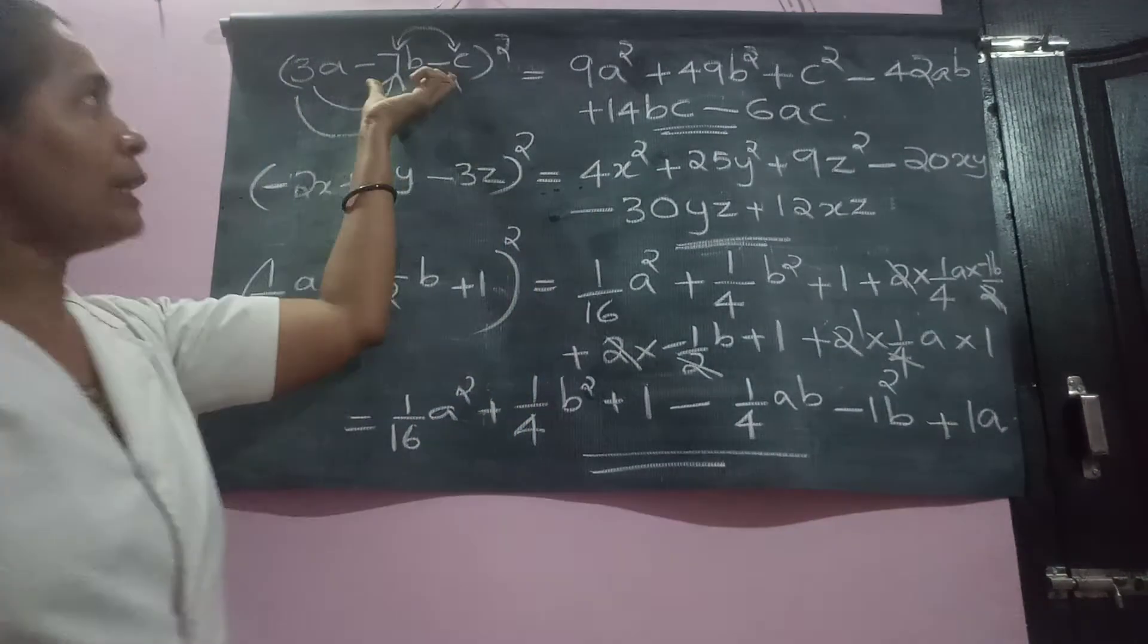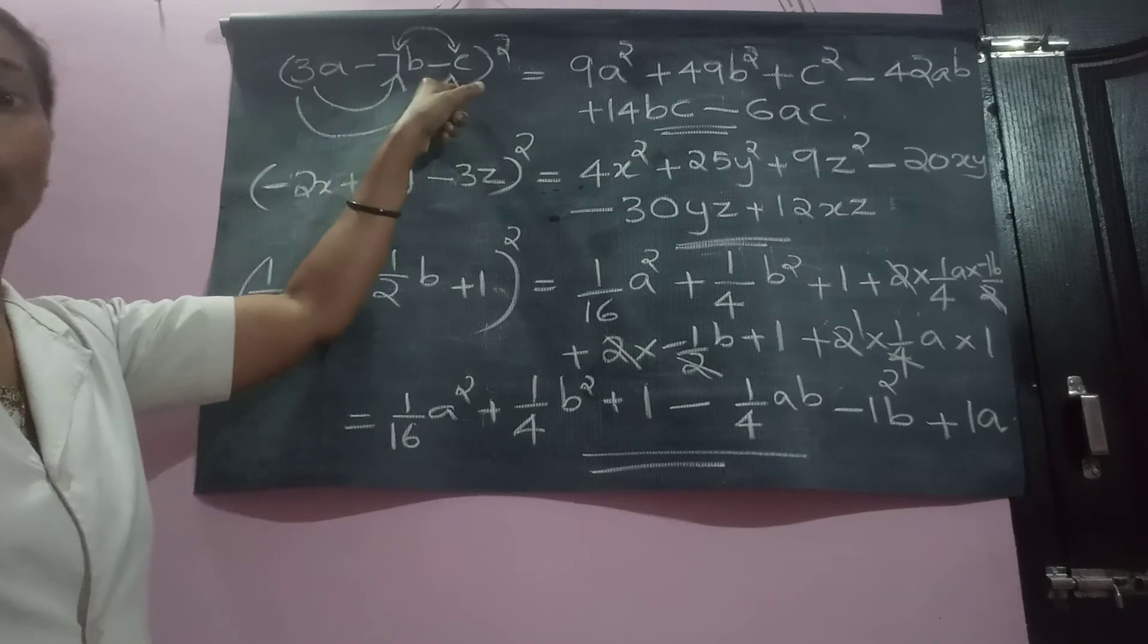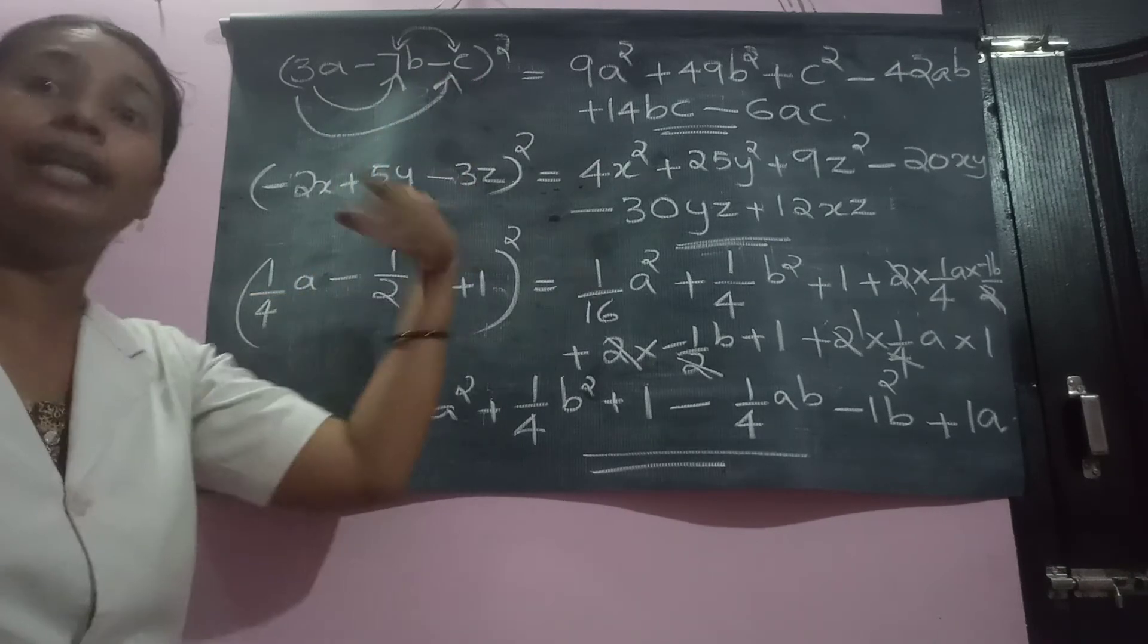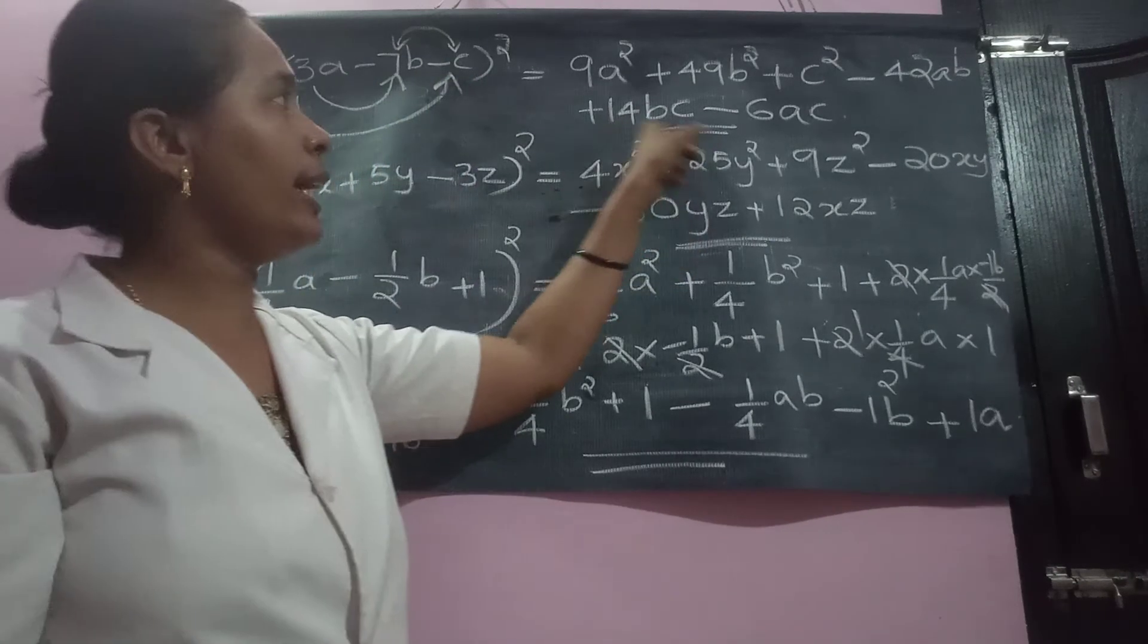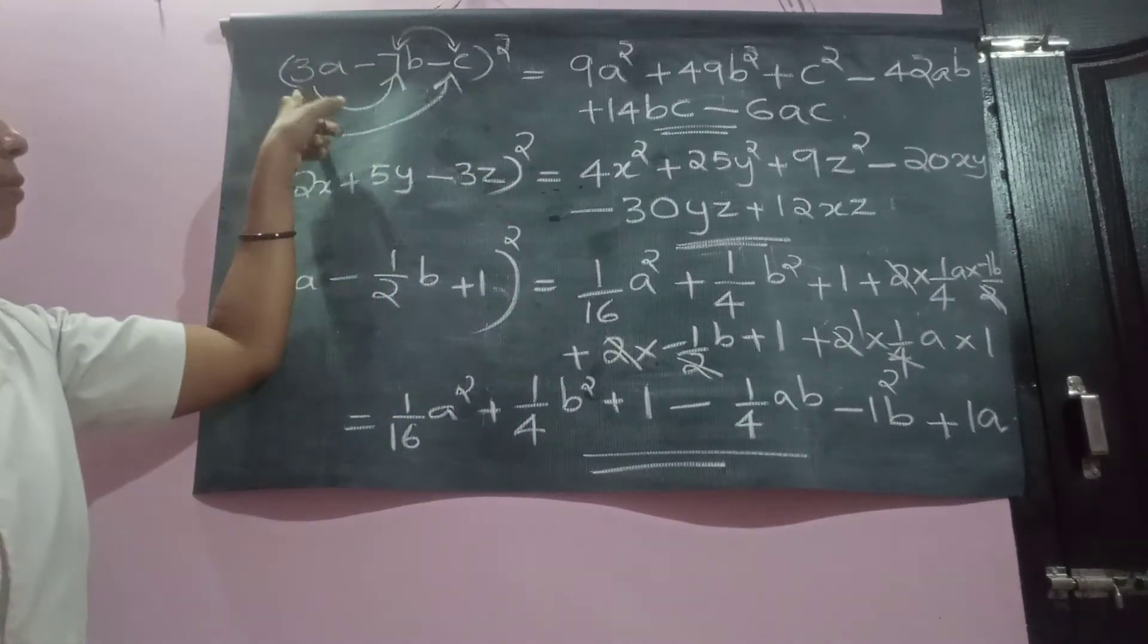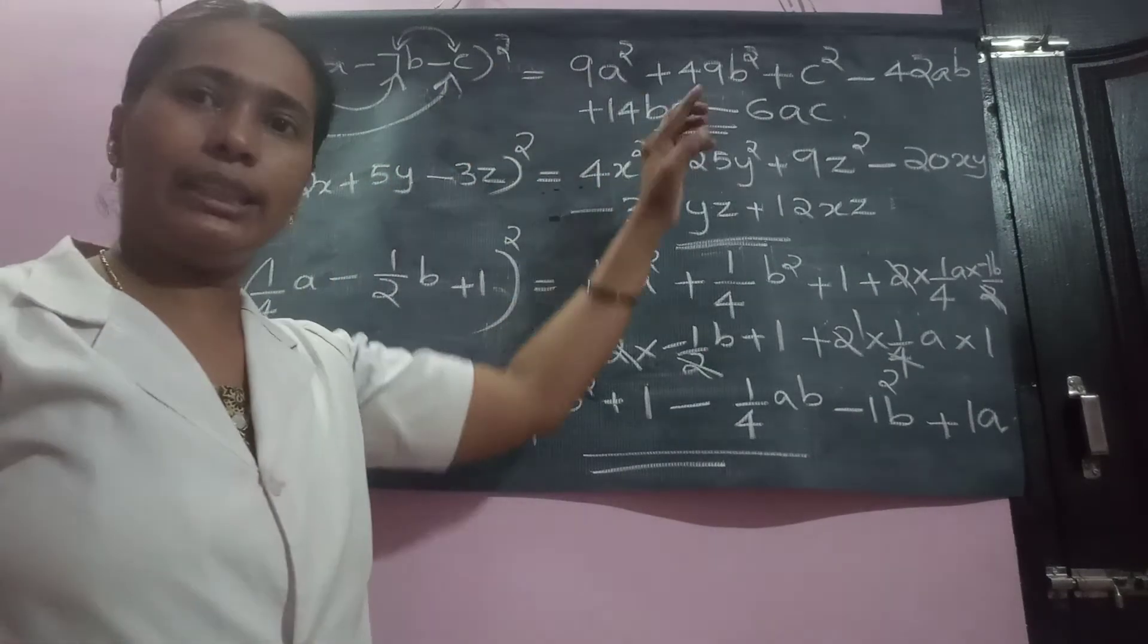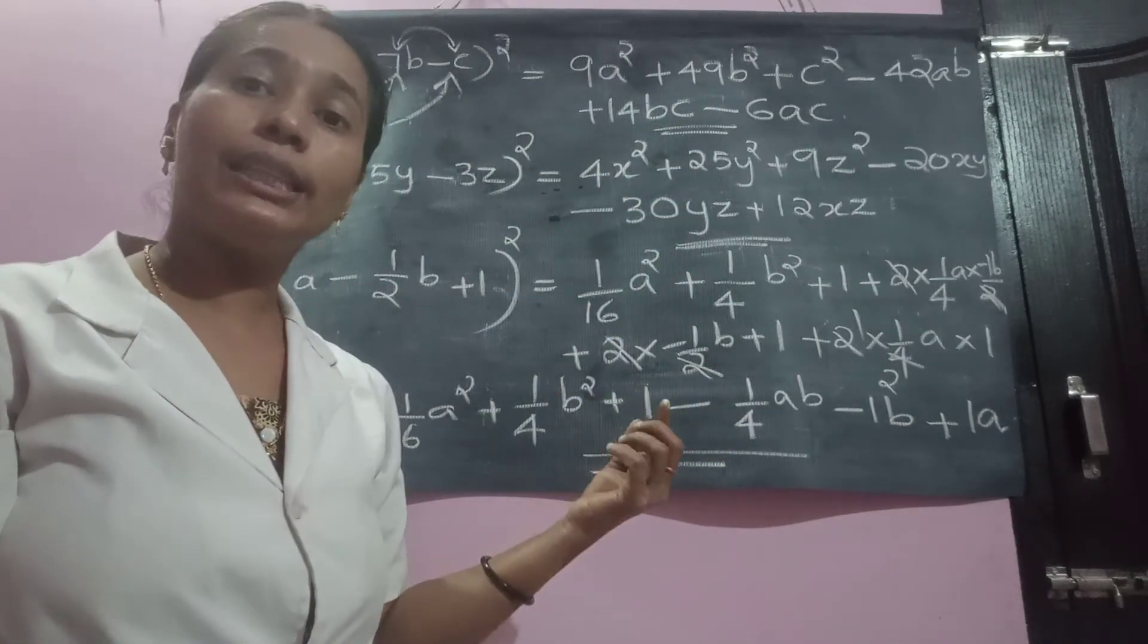Then comes, this become positive symbol Y. Negative, negative. Positive 7BC, double it. So, 14BC. 7BC become 14BC. Then next one. 3A into minus C is minus 3AC double it. Minus 6AC.